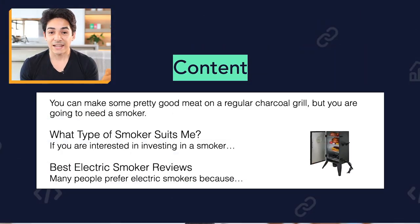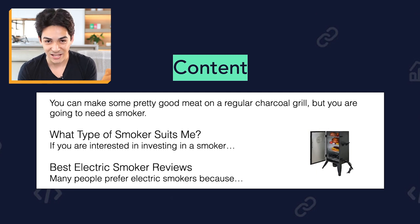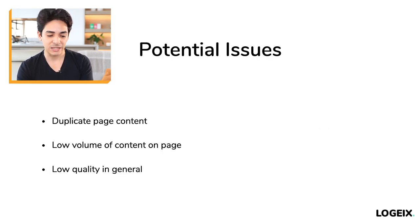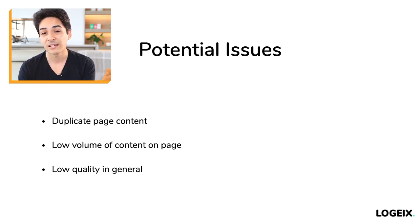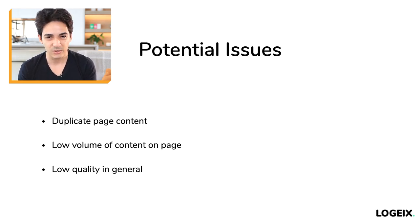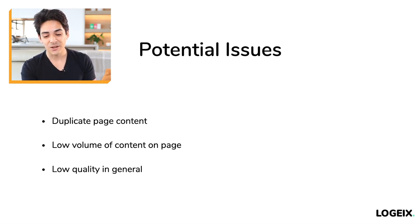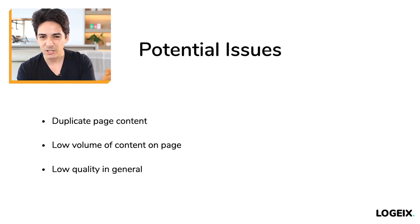Next we have content — blog posts, product information, all that. Potential issues include: duplicate page content, low quality or low volume of content (like only 100 words on a page), or no unique content at all, especially with tags. And just generally, is the content low quality overall? That's something to check for manually, as it could mean a big overhaul.